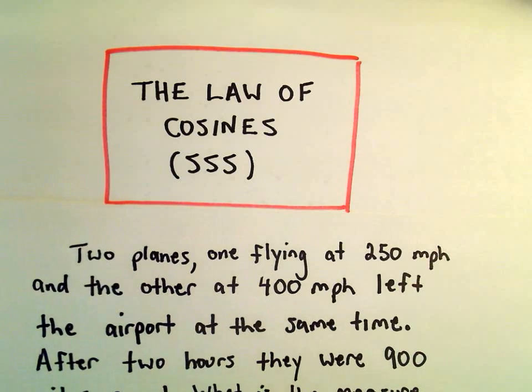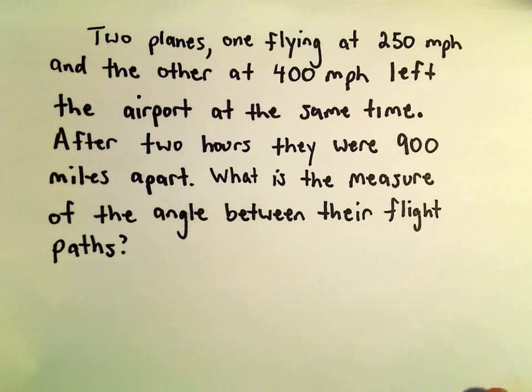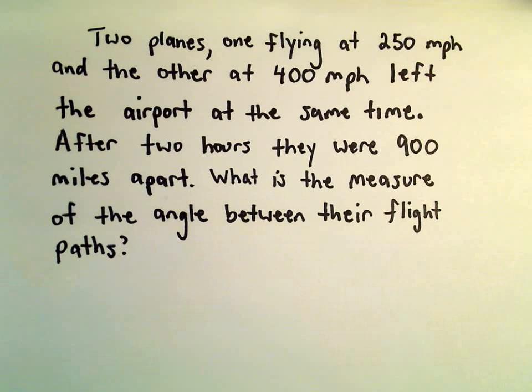All right, so kind of a word problem here involving the law of cosines. We've got two planes, one flying at 250 miles per hour and the other at 400 miles per hour, and they left the airport at the same time. After two hours they're 900 miles apart, and we want to know what's the measure of the angle between their flight paths.